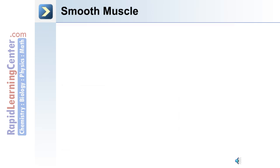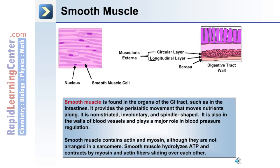The second type of muscle we'll discuss is smooth muscle. Smooth muscle is found in the organs of the gastrointestinal tract, such as in the intestines.